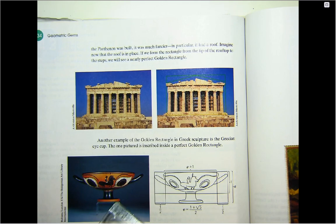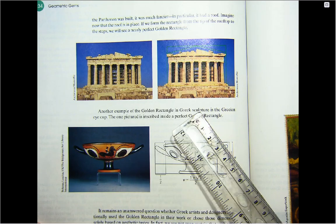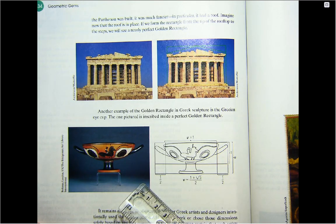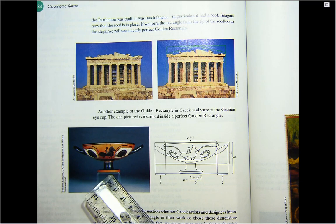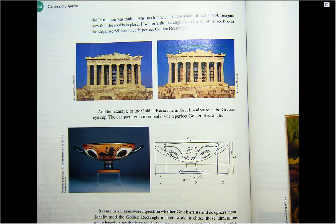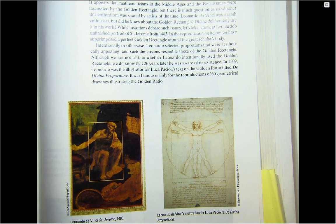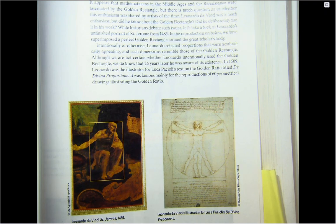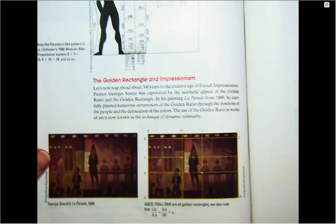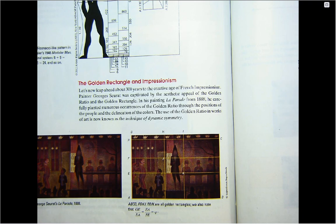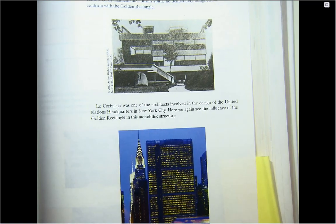We also have a Greek sculpture — Doric columns — that has golden rectangles in it, as diagrammed. Here's some of Leonardo da Vinci's work; Leonardo da Vinci loved math, so he puts lots of golden rectangles in. Here is some of Seurat's work and you can see golden rectangles superimposed on it. Then we have architecture showing up with some golden rectangles on the next page, with the actual drawing imposed on them.